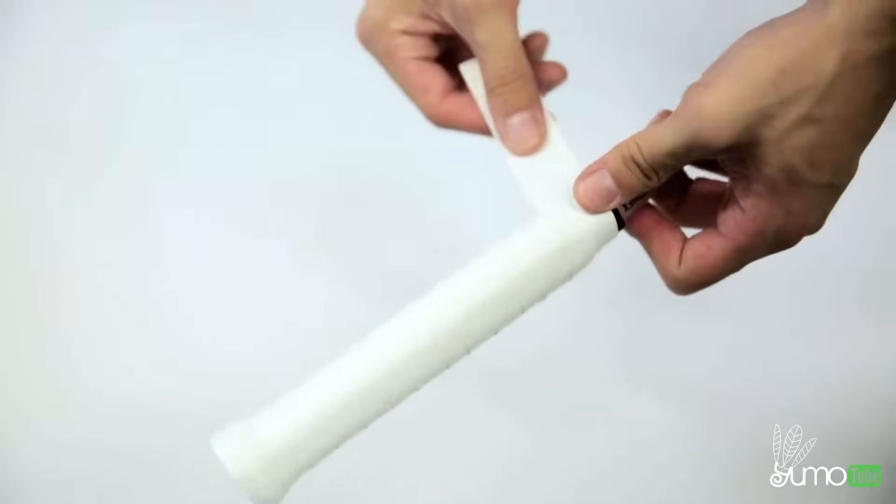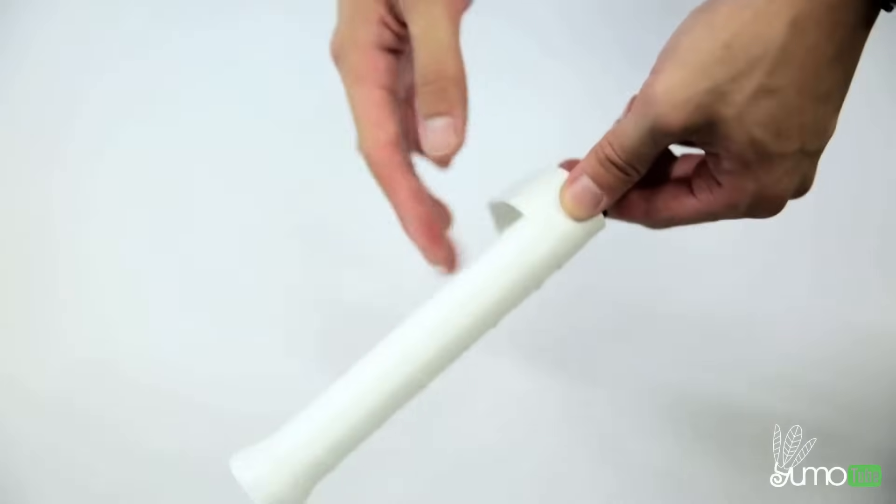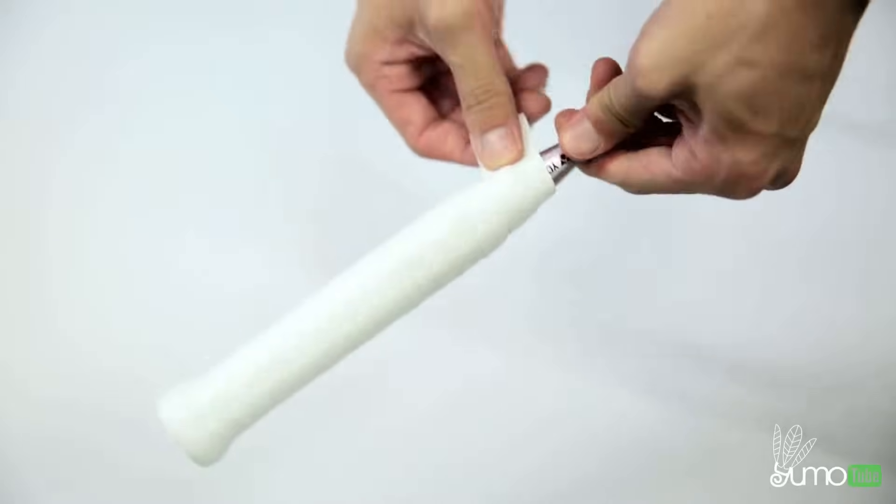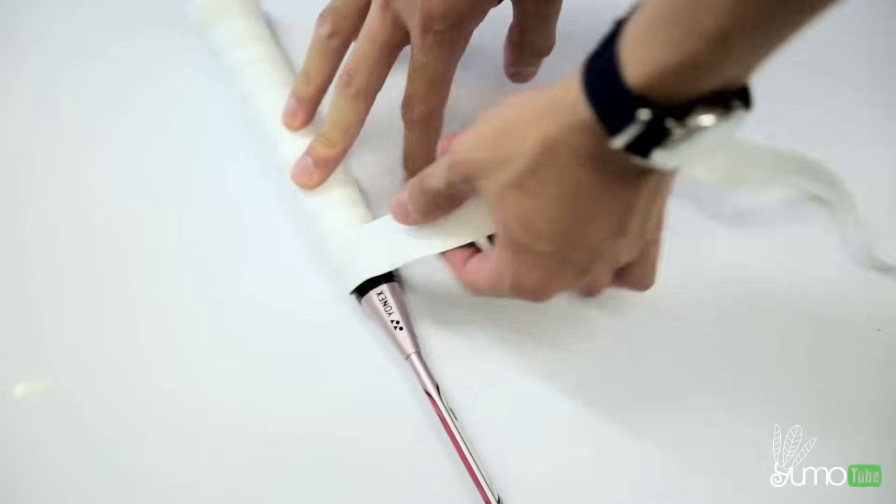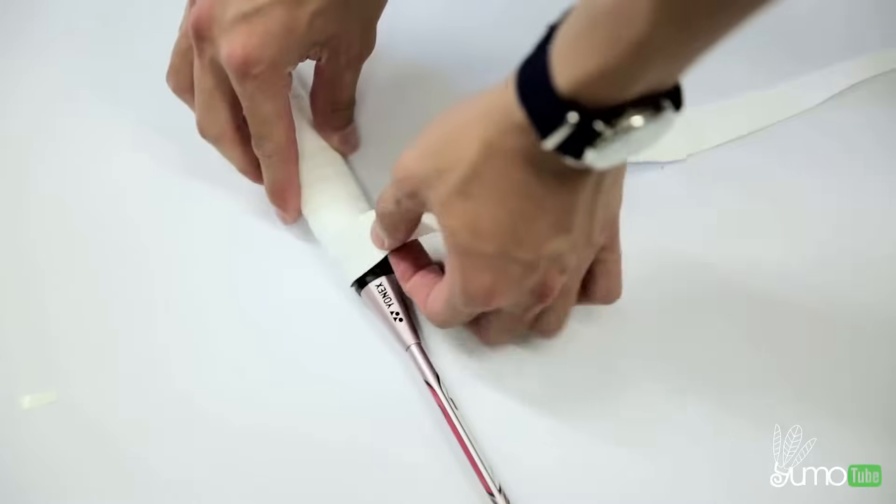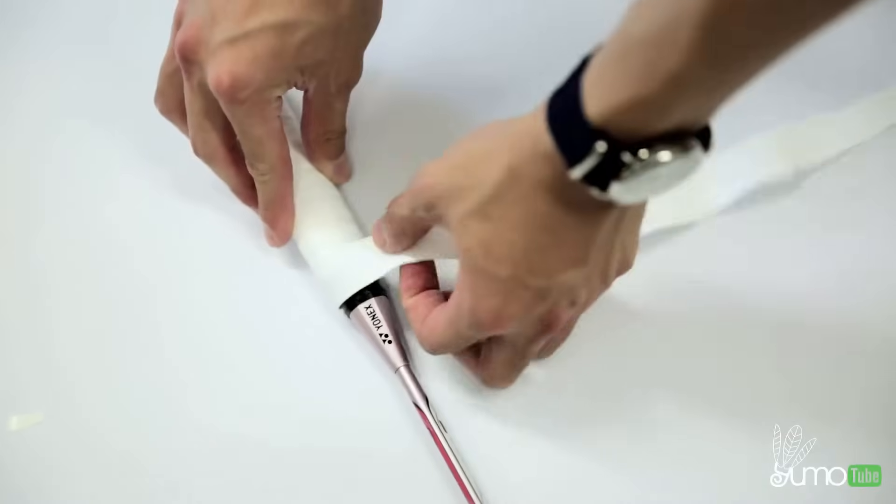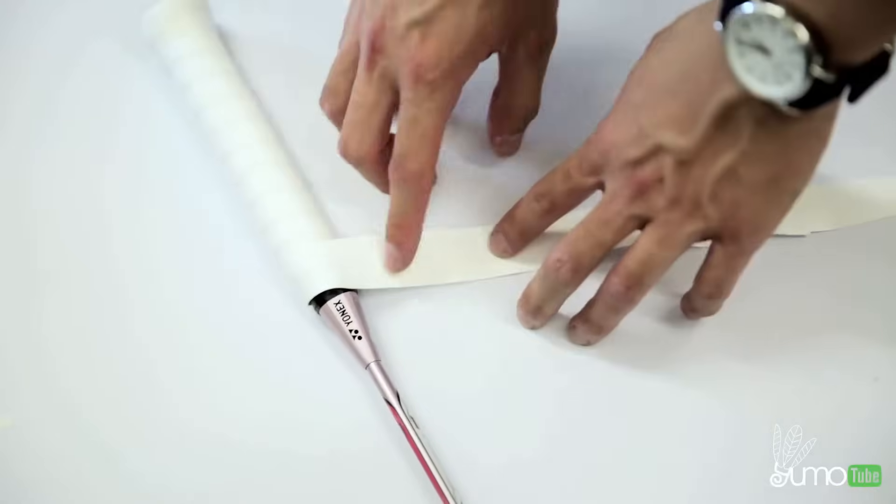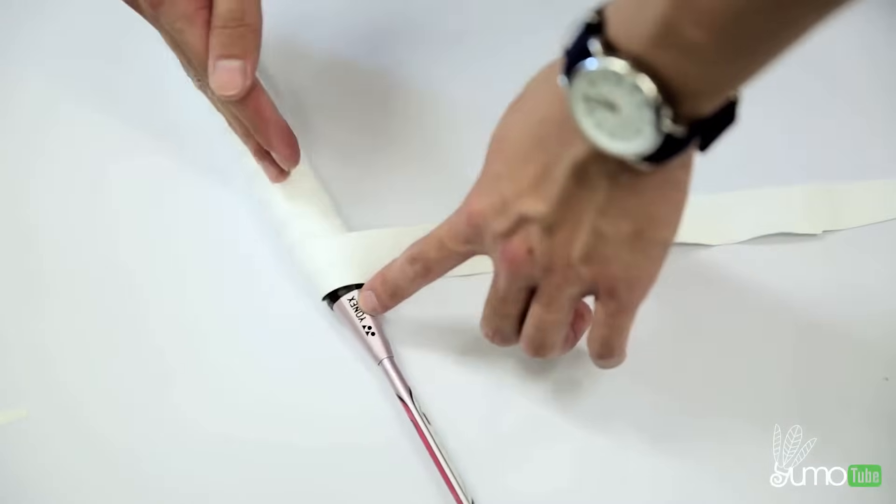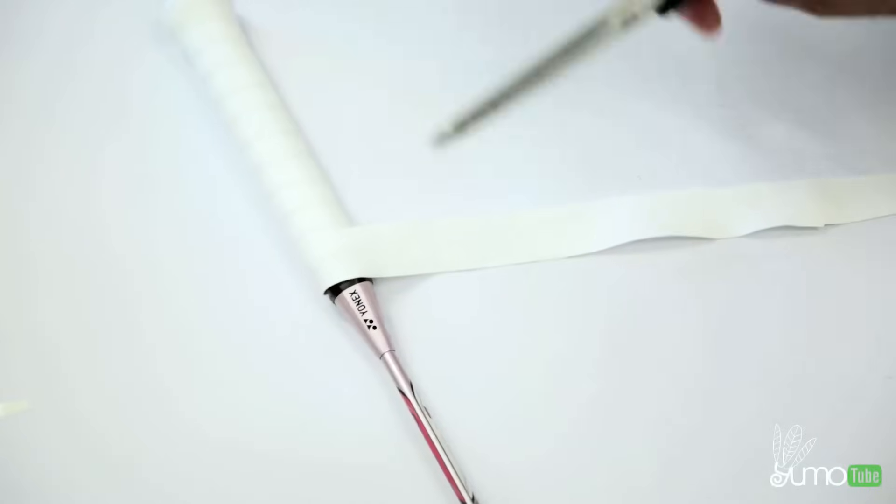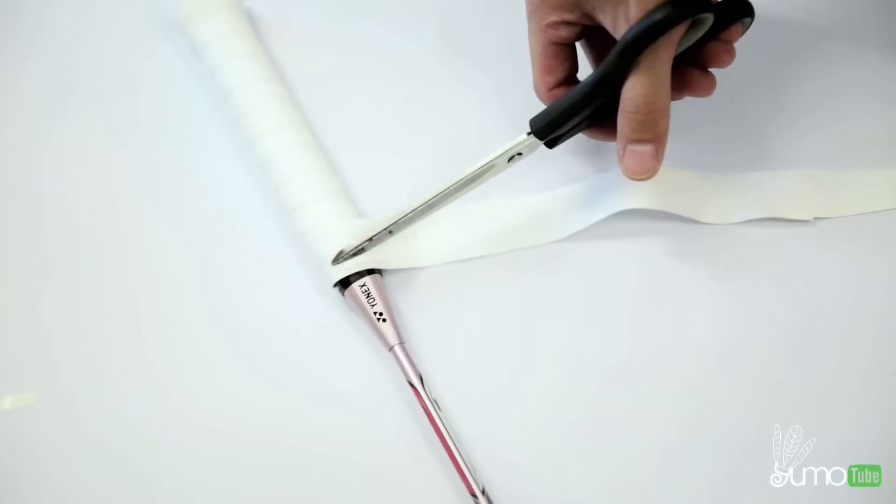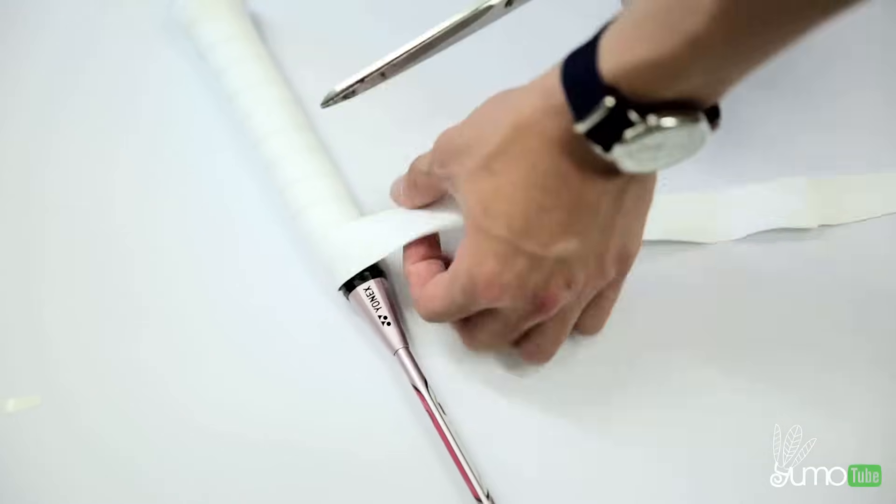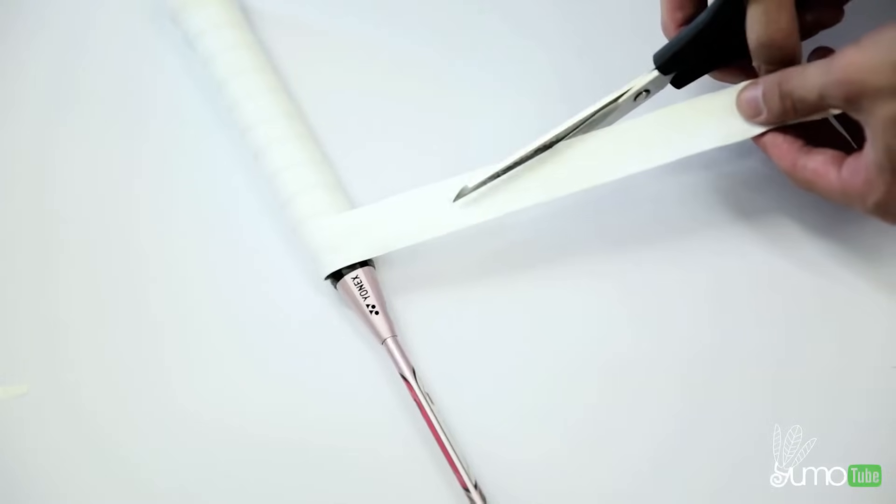And once you get near the top you can cut it off here or you can keep on going depending how high you want the grip to go. So once you finish wrapping and you want to stop and cut it off here, you would lay this down on the ground and then keep this slanted at an angle towards the grips here. You want to keep it slanted at an angle. You get scissors and you want the scissors to be perpendicular to the handle, to the grip, and then you just cut it like this.